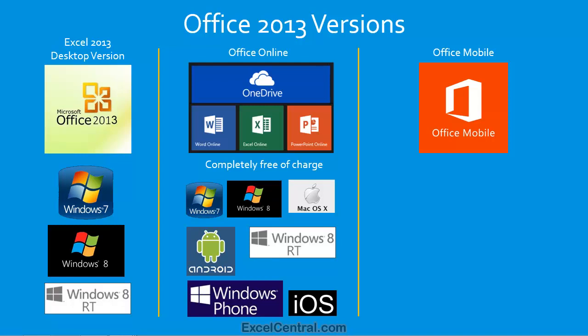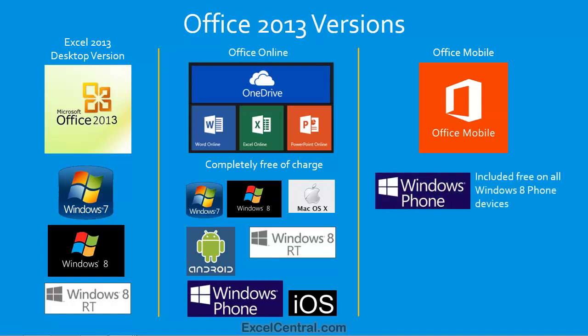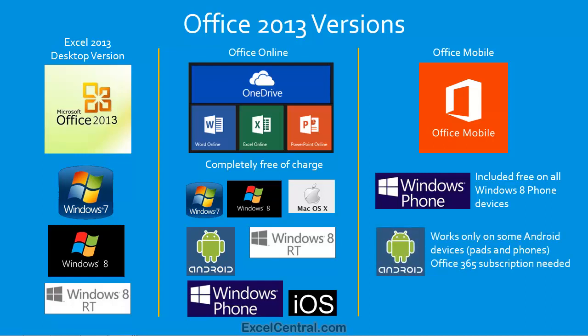The third version of Office 2013 is Office Mobile. This is a version of Office intended for mobile phones, and it's been designed with very small screen sizes in mind. Office Mobile is included free on all Windows 8 phone devices, which is a big selling point for Windows 8 phones. Office Mobile is also available for some, but not all, Android devices — both pads and phones. In order to download the Android Office Mobile app, you will need an Office 365 subscription.